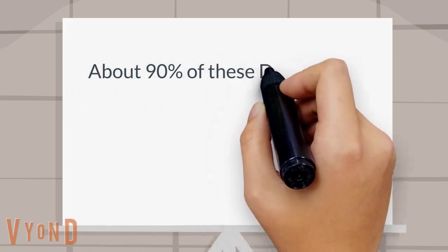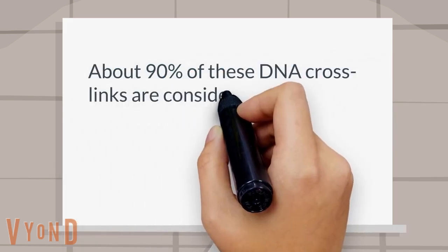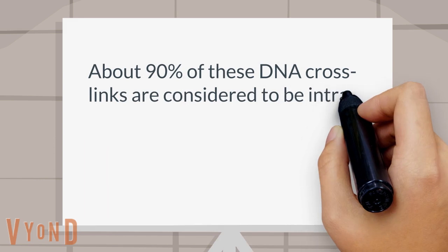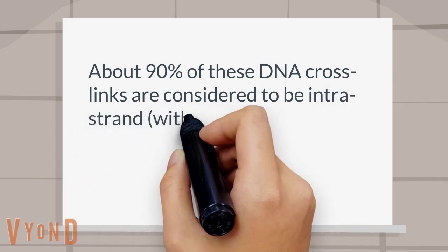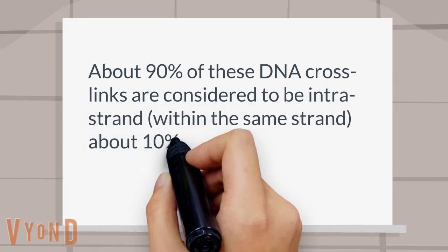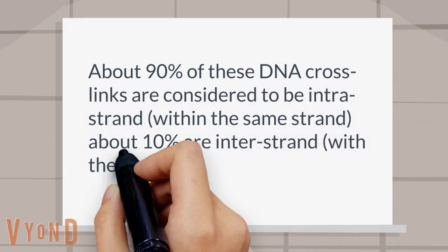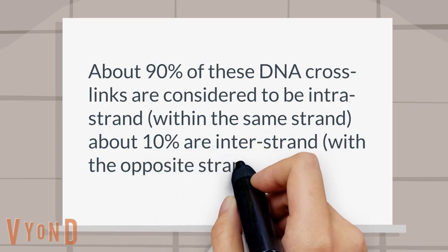About 90% of these DNA cross-links are considered to be intra-strand, within the same strand. About 10% are inter-strand, with the opposite strand.